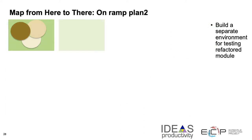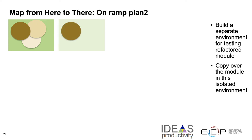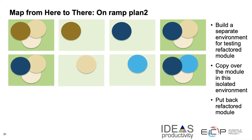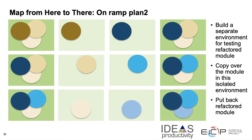There is an alternative on-ramp plan two: first build a separate isolated environment for testing the refactored module, move the module into this isolated environment, refactor it, and bring it back into the original environment for testing. This can be done for any module that needs refactoring — isolate it, bring it into the isolated environment, convert it, put it back. When done with all modules, you're effectively done with refactoring. In transitioning Flash to FlashX, we used a mix of both of these on-ramp plans.